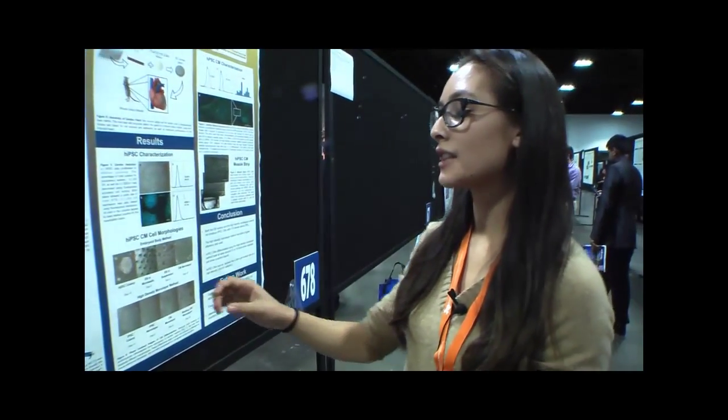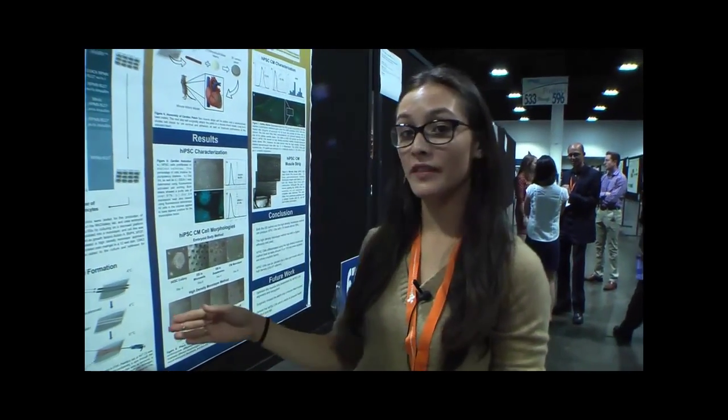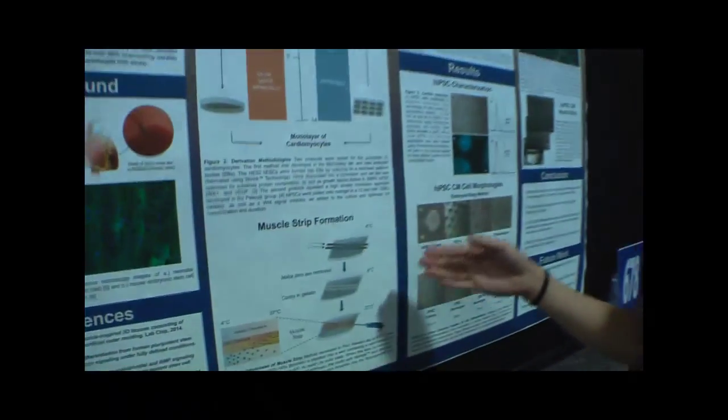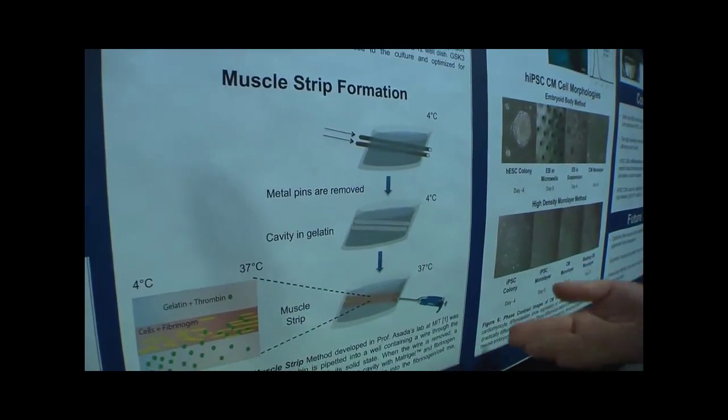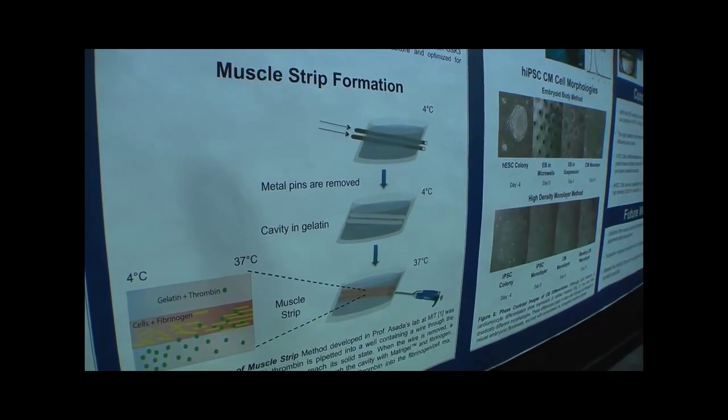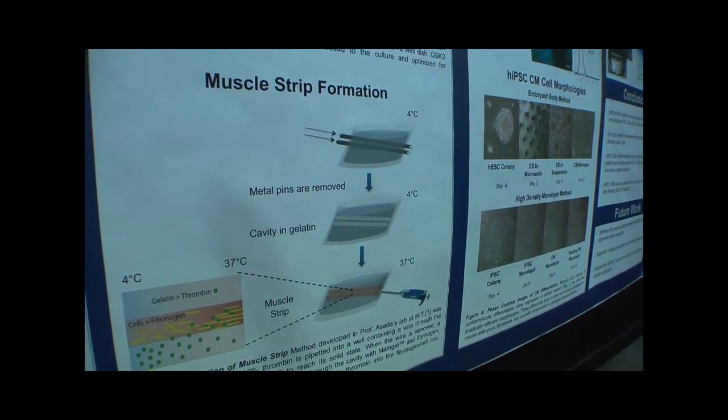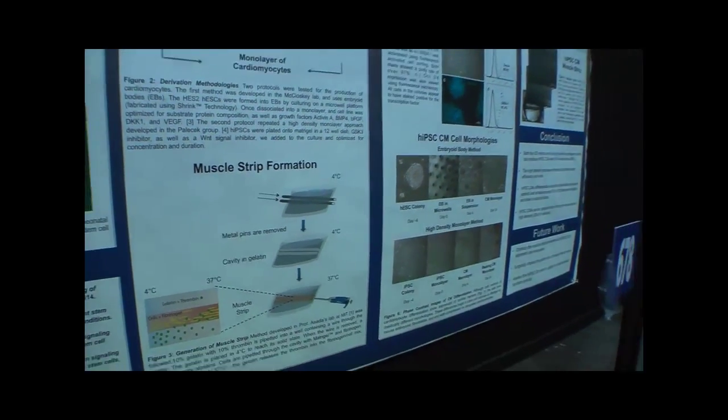When the gelatin solidifies, we remove metal pins which leave a cavity. We then pipette cells and fibrinogen through the cavity. When the gelatin goes from solid to liquid state, the thrombin diffuses into the tissue to form a fibrin hydrogel. We think this method can give us higher cell density than if we were to seed cells onto an extracellular matrix.